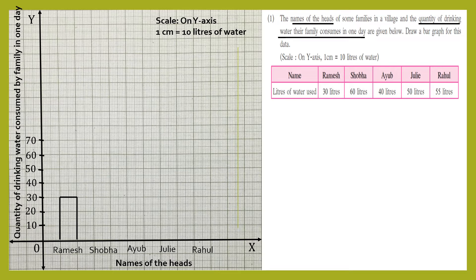For Shobha, Shobha's family consumes 60 liters of water. So we'll have a first vertical line of six centimeters, which corresponds to 60 liters of water, one more vertical line of the same height, and the top of both lines will be joined by a horizontal line. This completes the rectangle for Shobha.